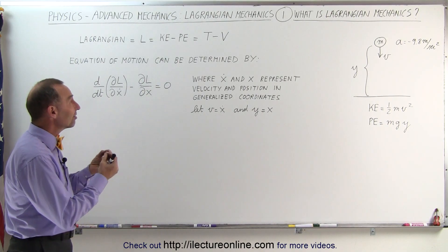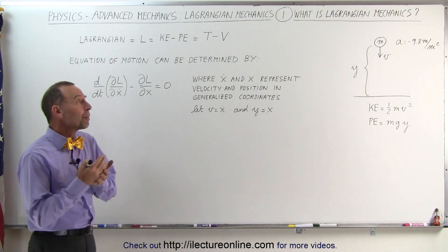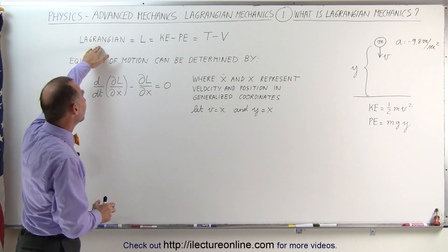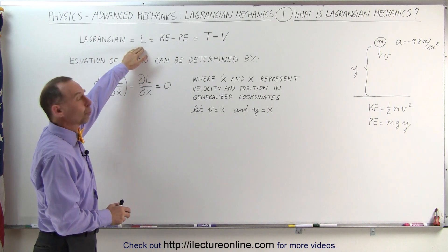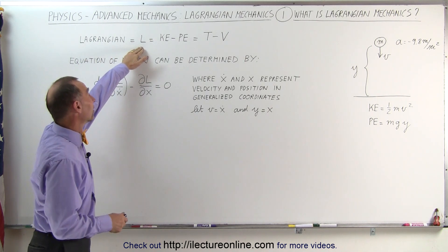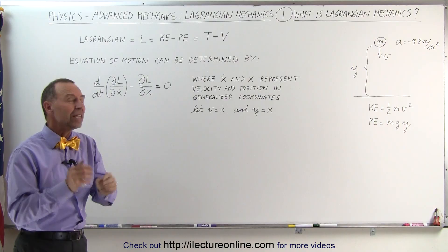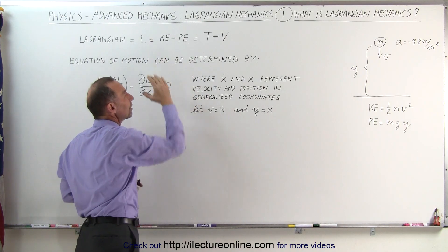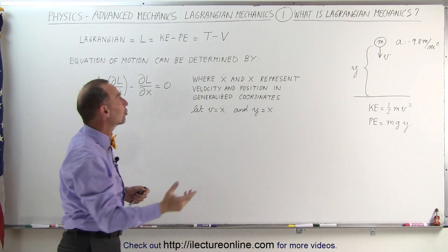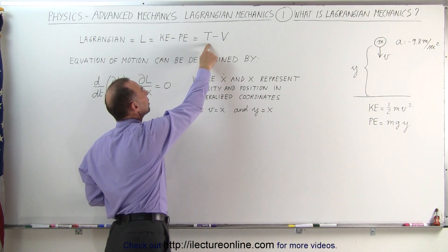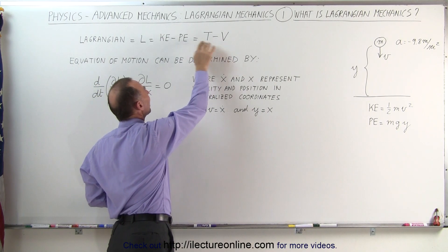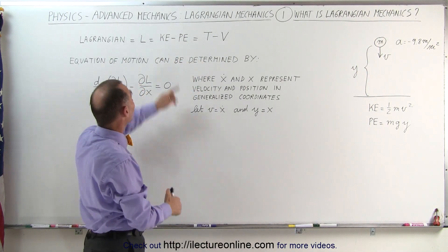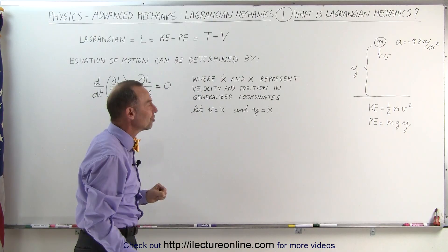What is the concept here? Lagrange came up with a concept that he called the Lagrangian. He used the letter L for that. He said that L was equal to the difference between the kinetic energy and the potential energy of an object. Many textbooks use T for kinetic energy and V for potential energy, but I prefer KE and PE because it makes it easier to identify them.